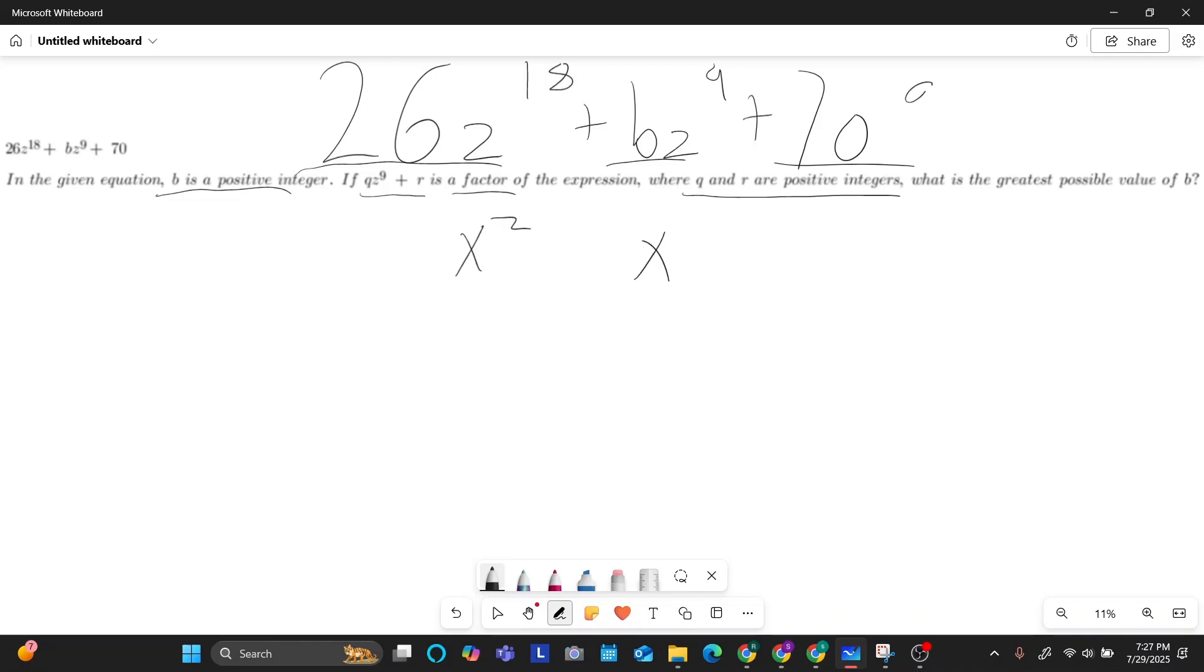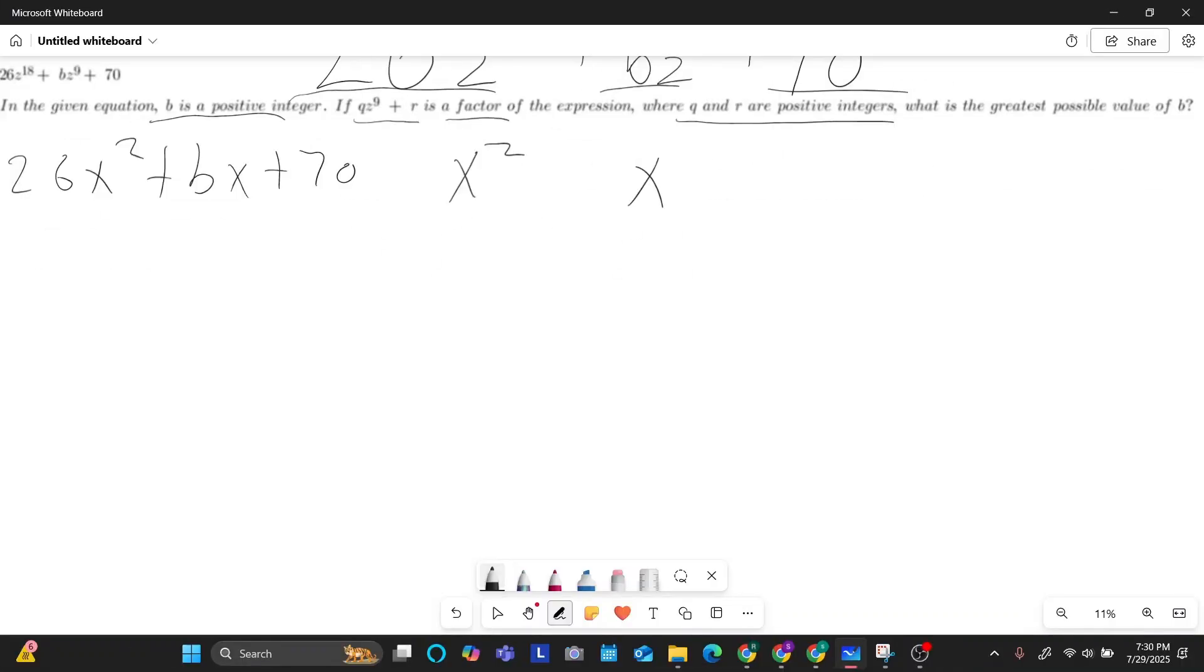So if you wanted to understand this better and paint the more clear picture in your head, what you could actually just do is you could substitute x for z to the nine. And so if you were to do that, the expression would just be 26x squared plus bx plus 17. And so now, since we can kind of see that it's a quadratic, we know that we have a quadratic equation essentially, and we have a factor pair of that quadratic equation.